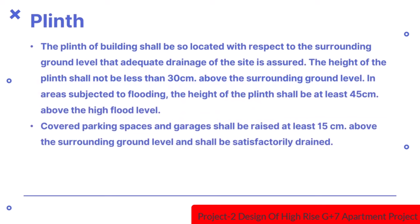The plinth of a building shall be so located with respect to the surrounding ground level that adequate drainage of the site is assured. The height of plinth shall not be less than 30cm above the surrounding ground level.